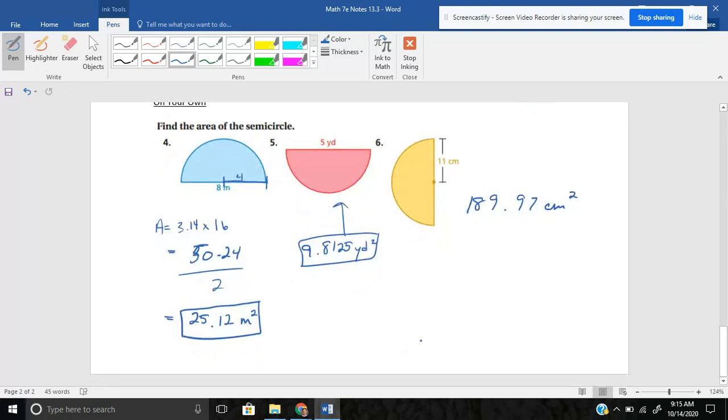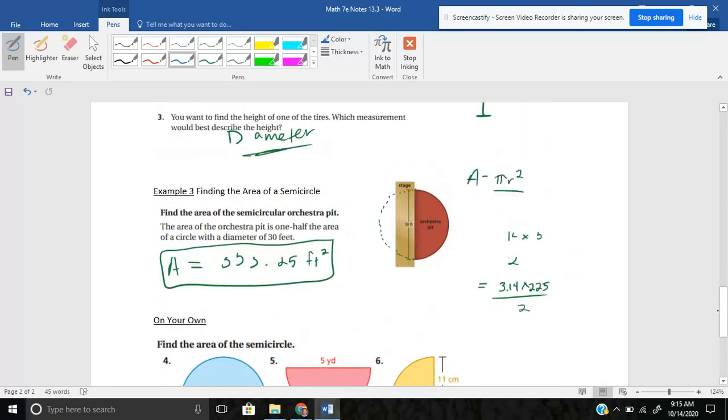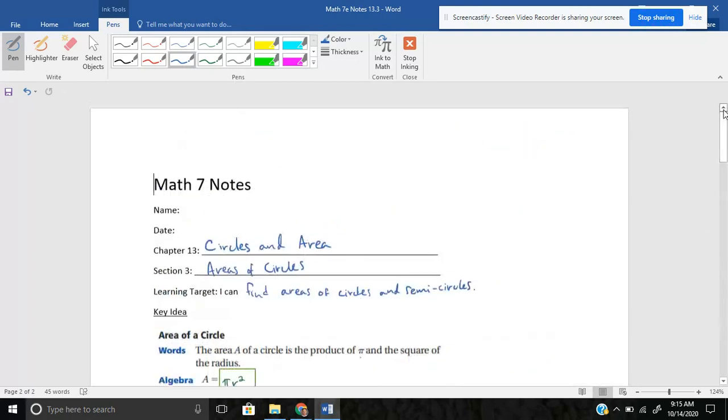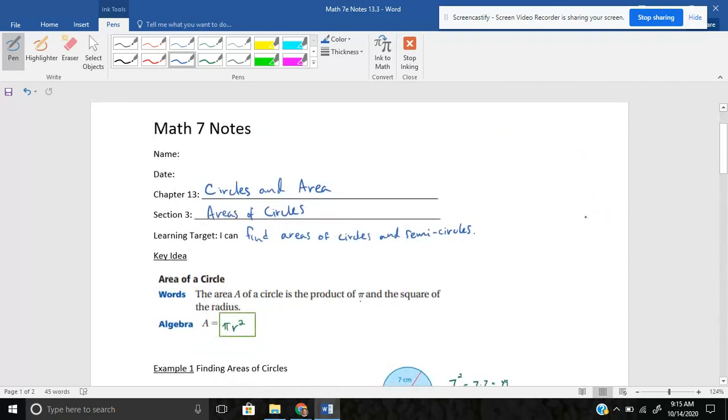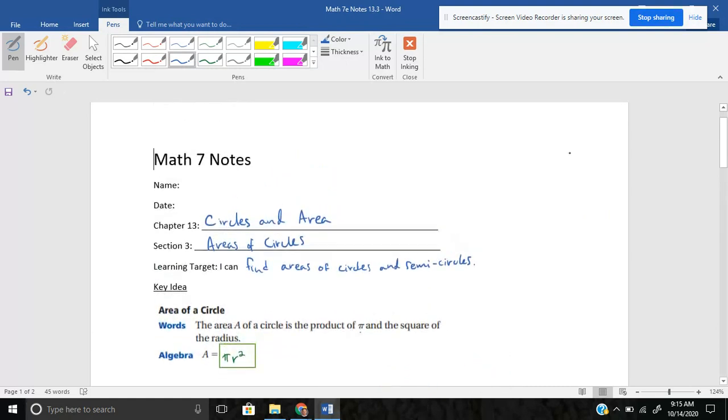And that's all I have for today. Short and sweet on areas of circles. Please let me know if I can clear anything up for you. Again, here is our big idea, A equals pi r squared, using that formula to find area of a circle. Thanks for checking this out. I'll see you next time.